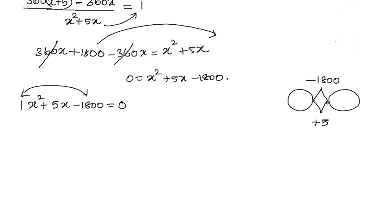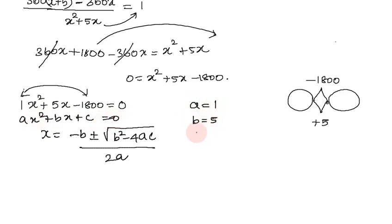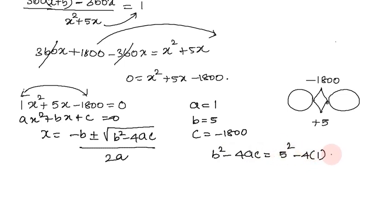We use the quadratic formula: x equals minus b plus or minus root of b squared minus 4ac, divided by 2a. Comparing with ax squared plus bx plus c equals 0, we get a equal to 1, b equal to 5, and c equal to minus 1800.